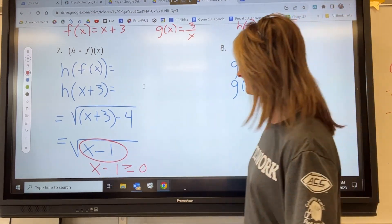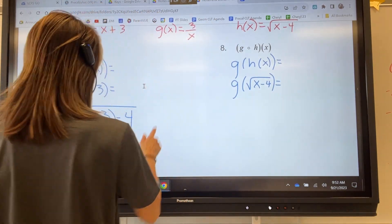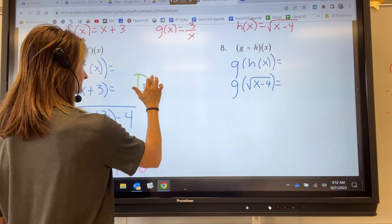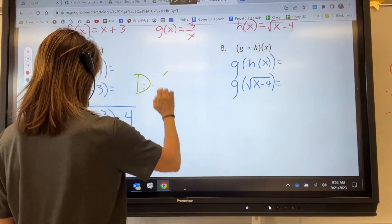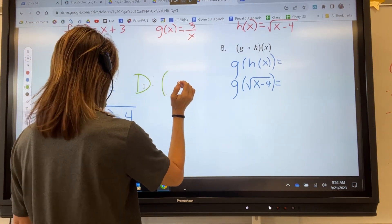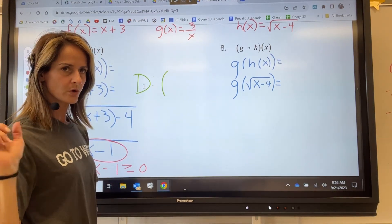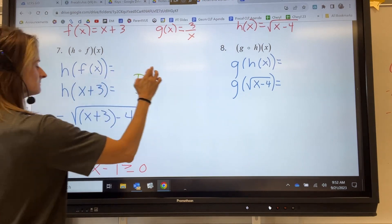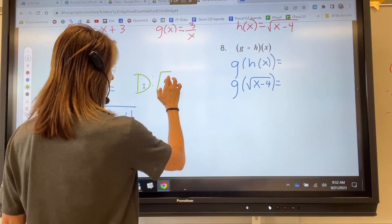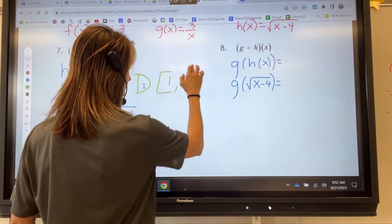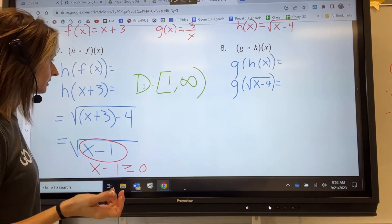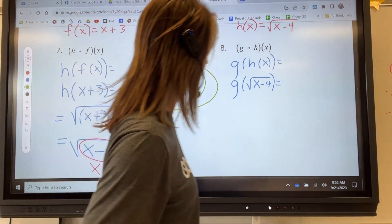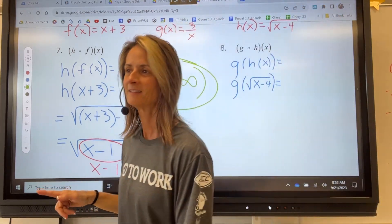I move the 1 over and I get x values have to be greater than or equal to 1. So, how do I write that? The domain. I'll just write it in interval notation. They have to be greater than or equal to 1. Let me back up. We're going from 1 to infinity. Good. Beautiful. Questions?